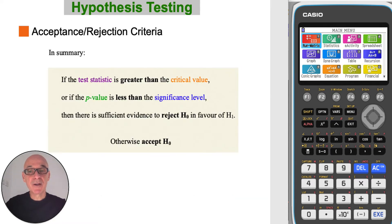To remind you of the acceptance rejection criteria: if the test statistic is greater than the critical value, or if the p-value is less than the significance level, then there is sufficient evidence to reject the null hypothesis H₀. Otherwise, we accept the null hypothesis H₀.